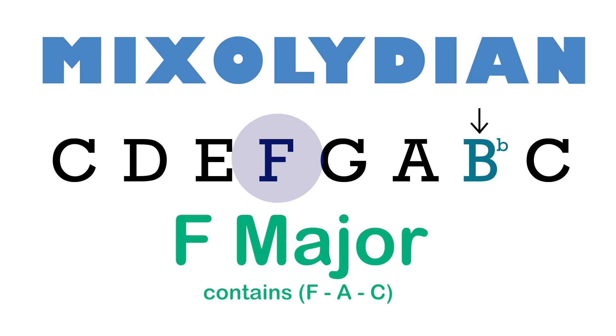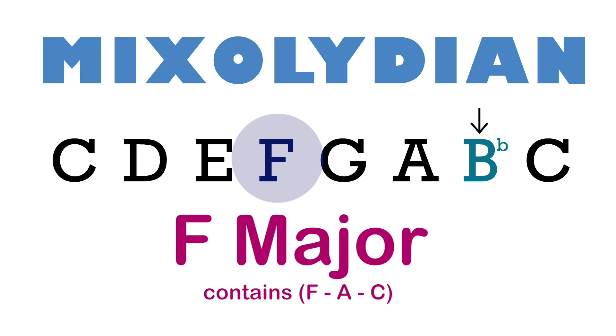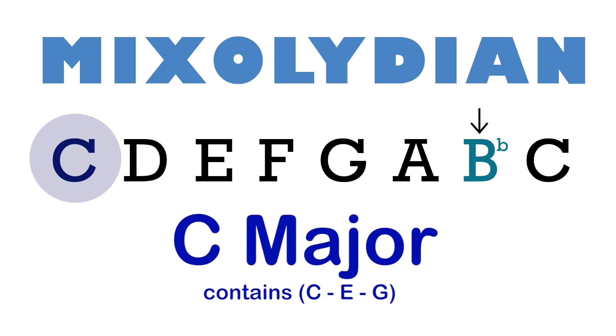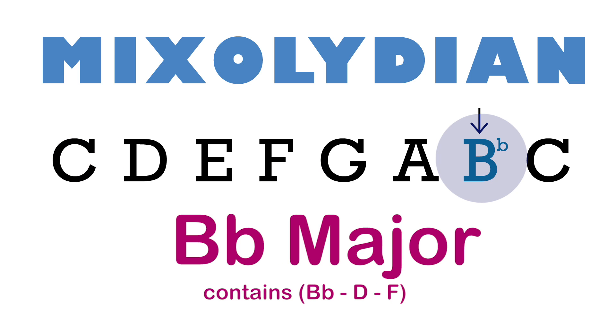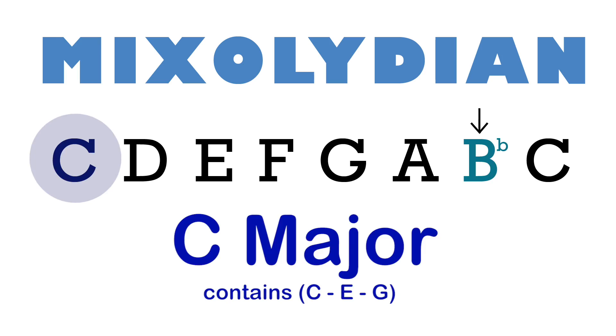These Mixolydian progressions form the backbone of AC/DC's sound, and if we add vocal lines that include a minor third, it will sound very similar to the band's compositions. To my ear, Mixolydian sounds like Major's rebellious little brother. The two scales have a lot of the same positive characteristics, but Mixolydian just feels more cool — more rock and roll.